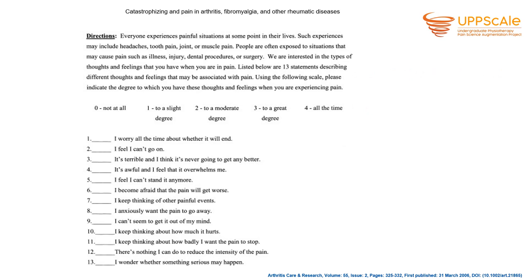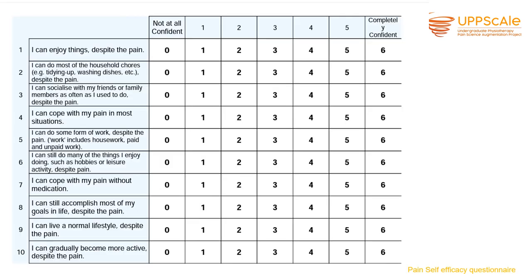The Pain Catastrophizing Scale includes items such as 'I worry all the time whether the pain will end,' 'I feel I can't go on,' and 'it's awful and it overwhelms me.' The Pain Self-Efficacy Questionnaire asks whether patients can enjoy things despite the pain, do household chores despite pain, socialize with friends, and so on. A higher score on this questionnaire indicates higher pain self-efficacy, meaning patients can better manage their pain on their own.